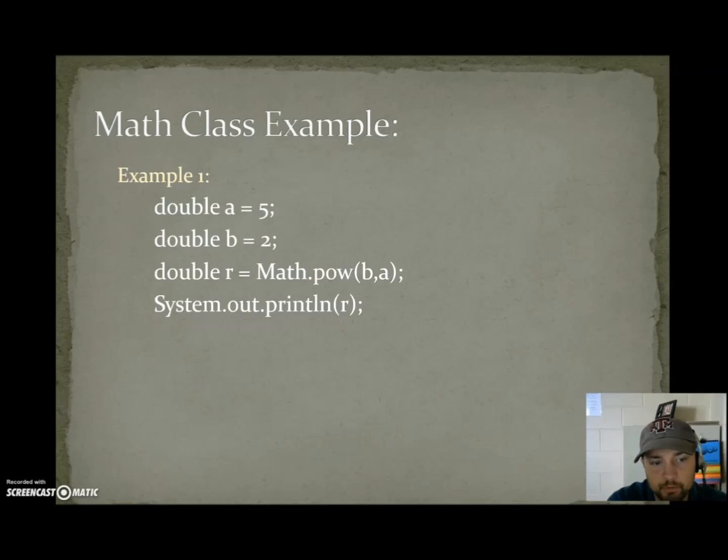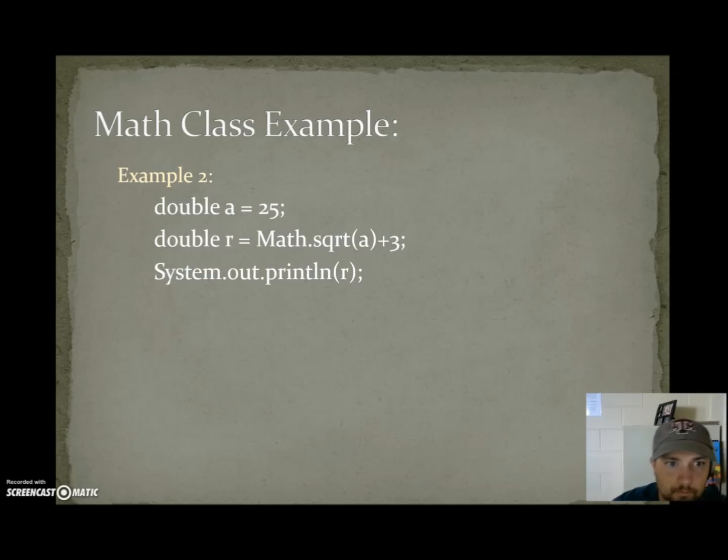My videos are kept to a 15-minute block, and I ran out of time on the last one. We're going to have to finish these last two examples really quick. So we have double a equals 5, double b equals 2. Double r equals Math.pow(b, a). This would be take b to the power of a. 2 with an exponent of 5 would be 32.